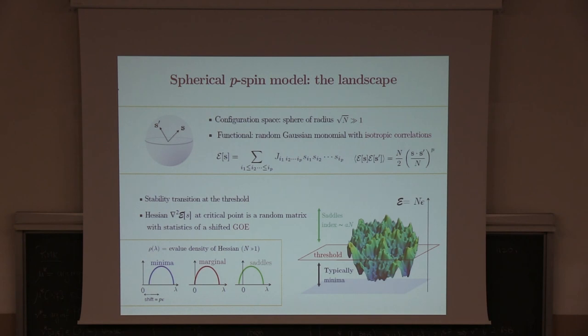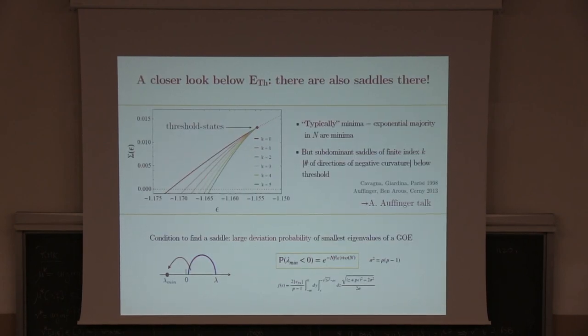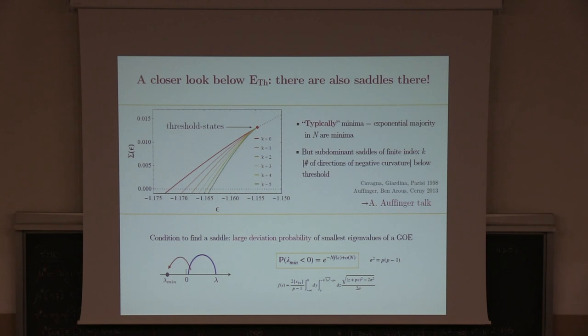As energy increases toward the threshold, the gap closes, and exactly at the threshold you have marginality and the appearance of a flat direction. Above the threshold, you find many negative eigenvalues, indicating that stationary points there are saddles with a huge index. Minima are typically below the threshold — 'typically' meaning exponentially dominant in N. So if you take a stationary point at random in this energy regime, with high probability it is a minimum. But if N is finite, there is a finite probability to find something else — one can compute stationary points conditioned to be saddles with index 1, 2, 3, with an isolated negative eigenvalue from the bulk. You find that the number of saddles of finite index is exponentially smaller than the number of minima, due to a large-deviation cost that is exponential in N.